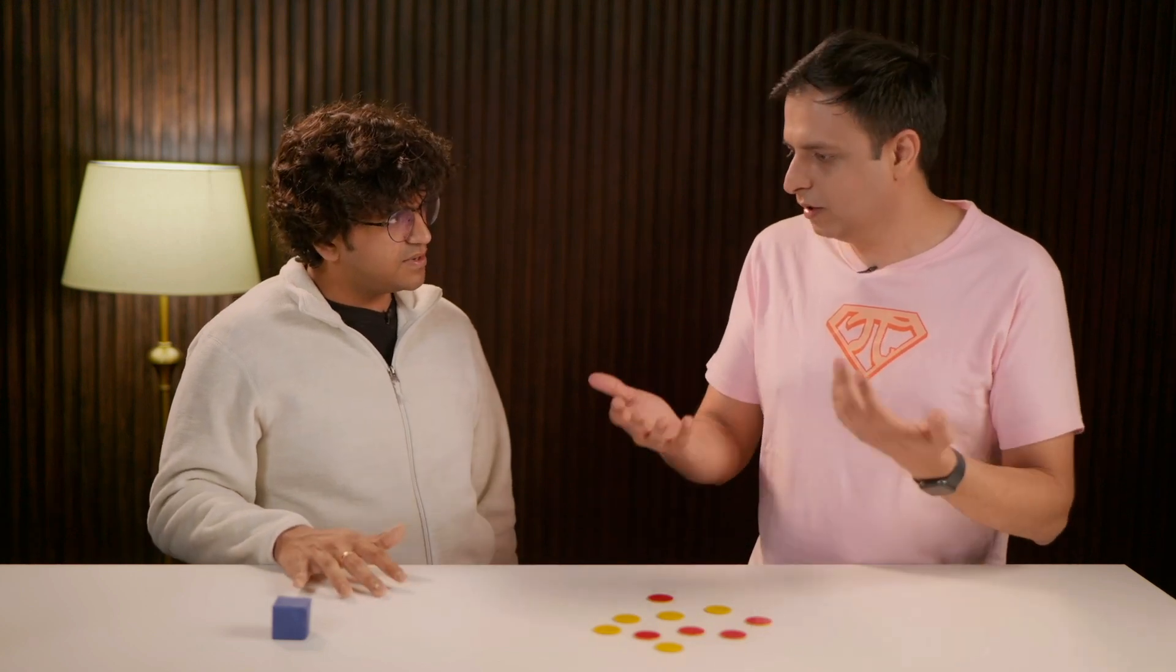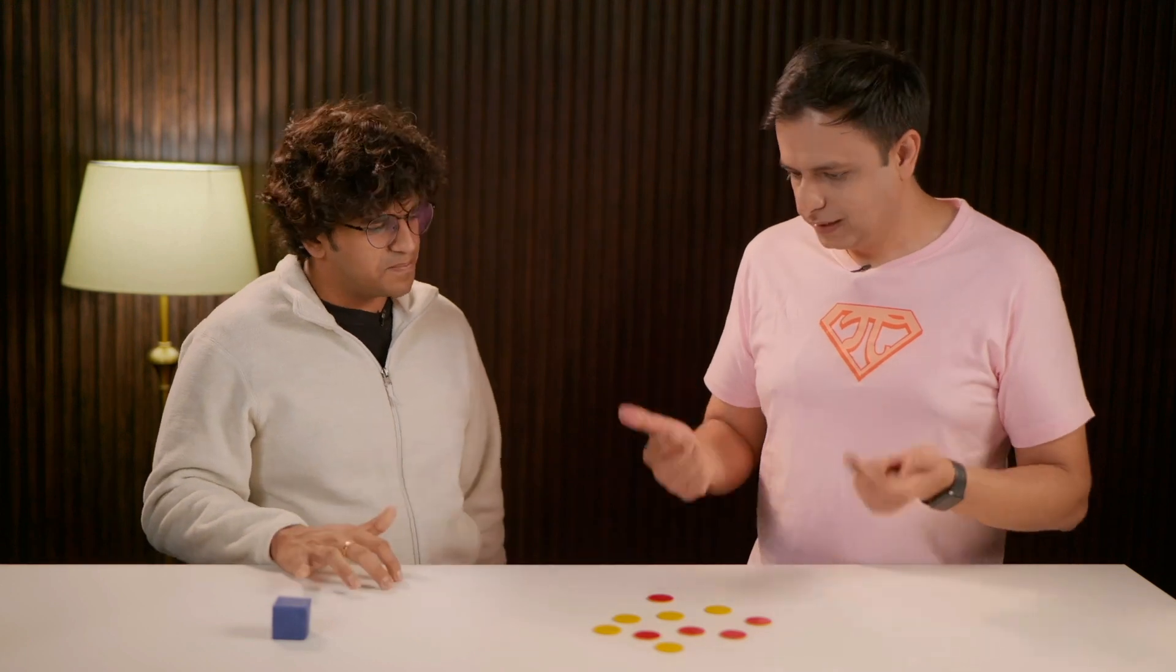So we started with five red coins. At every flip, what is happening to the number of red coins? It increases by two or decreases by two or stays the same. Exactly.